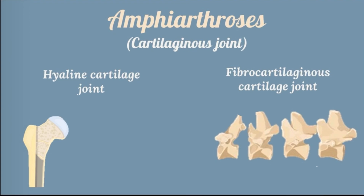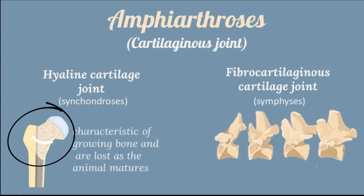The amphiarthrosis or cartilaginous joint permits only limited motion, functioning mainly for stretching or compression. There are two types: the hyaline cartilage joint, or synchondrosis, and the fibrocartilaginous joint, or symphysis. Synchondrosis is characteristic of the growing bone and is lost as the animal matures. An example is the union of the diaphysis and epiphysis of an immature bone; the growth plate is an example of synchondrosis.